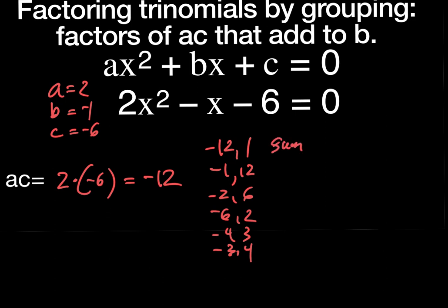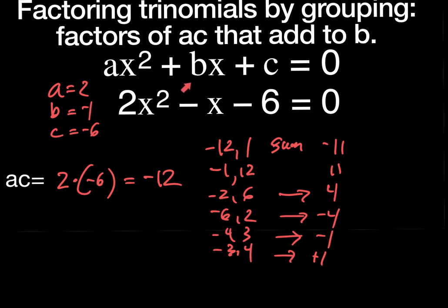Now I look at their sums: negative twelve and one add to negative eleven; negative one and twelve add to eleven; negative two and six add to positive four; negative six and two add to negative four; negative four and three add to negative one; negative three and four add to positive one. My b value is negative one, so the pair negative four and three is the one I want.